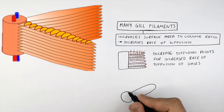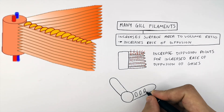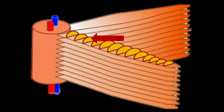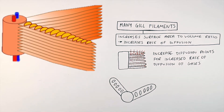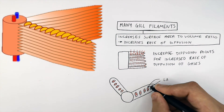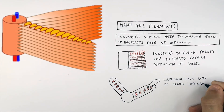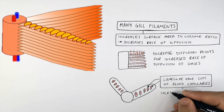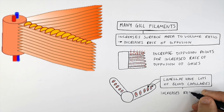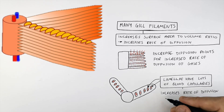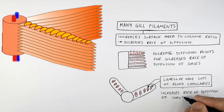This is a view from above a gill. These are the lamellae of the gill filaments, and the arrow is pointing to the lamellae on the other diagram. The lamellae have lots of blood capillaries which increases the rate of diffusion of gases. The more capillaries there are, the more surface area there will be for oxygen to diffuse into the capillaries from the water, and a higher surface area for carbon dioxide to diffuse out of the blood capillaries into the water.